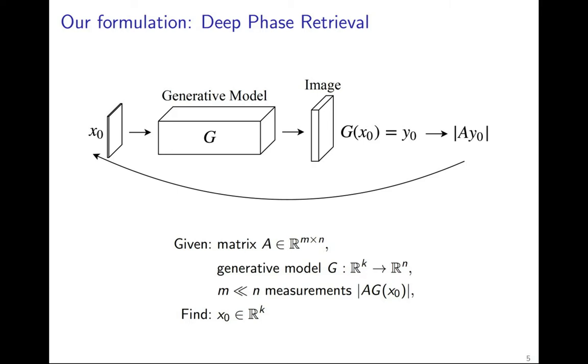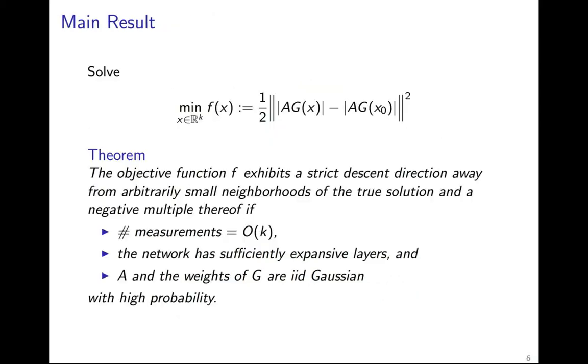We assume that G is a d-layer, fully-connected, feedforward neural network with ReLU activation functions and no bias terms. To recover x0, we solve the following L2 empirical risk minimization problem.